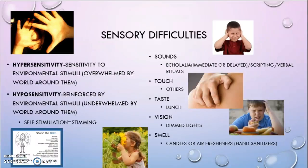Going off of that are the sensory difficulties involved with autism. Hypersensitivity is sensitivity to environmental stimuli — when they're overwhelmed by the world around them. Hyposensitivity is the opposite — they're underwhelmed by the world around them and need that extra touch or extra sound. Sometimes wearing a lot of clothes can add to that touch sensation, and smelling things can interest them. So across our senses — sounds, touch, taste — sensory processing is a key factor.